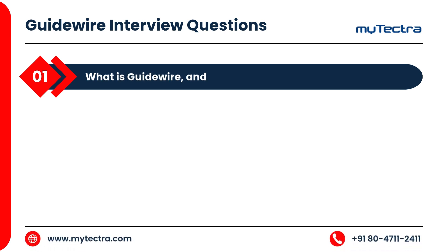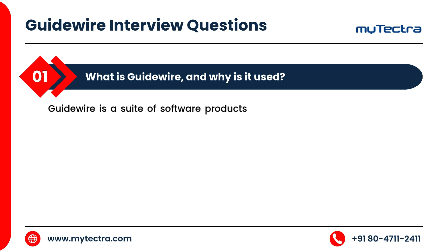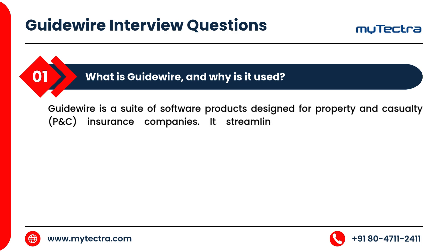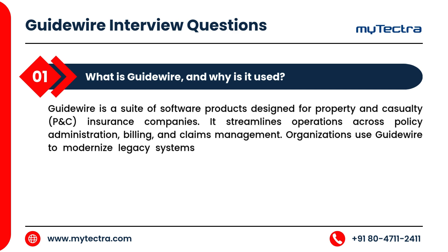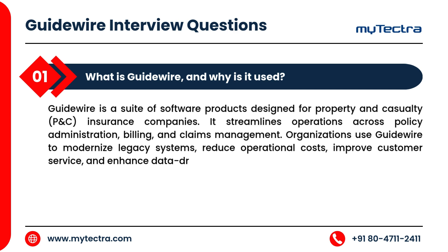What is Guidewire and why is it used? Guidewire is a suite of software products designed for property and casualty insurance companies. It streamlines operations across policy administration, billing, and claims management. Organizations use Guidewire to modernize legacy systems, reduce operational costs, improve customer service, and enhance data-driven decision-making.